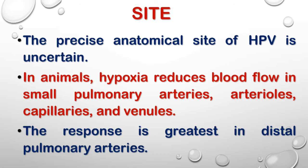As pulmonary capillaries have no smooth muscle in their walls, reduced capillary blood flow in response to hypoxia is surprising. One possible mechanism is the presence of contractile cells within the alveolar septa, which contract in response to hypoxia and directly constrict the capillaries or kink them by distorting the alveolar wall.